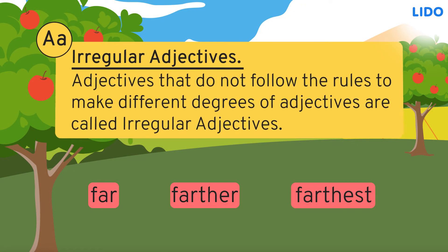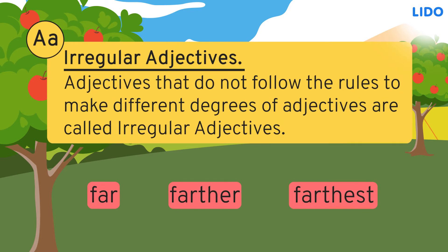Adjectives that do not follow the rules to make different degrees of adjectives are called irregular adjectives. There are many such irregular adjectives.